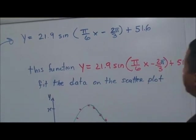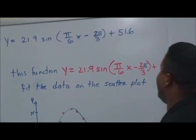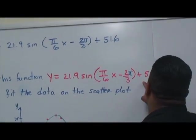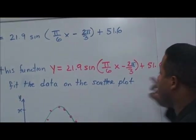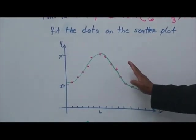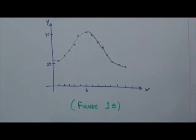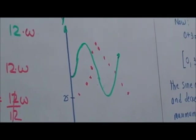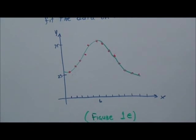Y is equal to 21.9 sine times pi over six times x minus four, right? Plus 51.6. And, of course, now this function y is equal to 21.9 sine, which is going to be pi over six x minus two pi over three plus 51.6. Will fit the data on the scatter plot. So, this is what we have right here. This is what it looks like. This is how it's fitted.